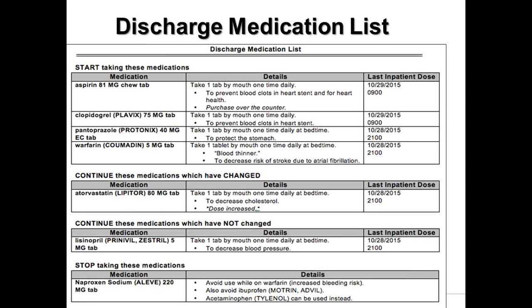The next section of the pharmacist discharge handoff communication tool includes detailed information about the patient's discharge medication list. The discharge medication list is divided into four main sections: the first section, 'start taking this medication'; the second section, 'continue this medication which have changed'; the third section, 'continue this medication which have not changed'; and the fourth section, 'stop taking this medication.'